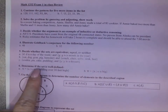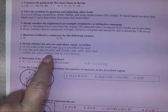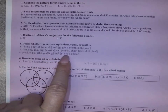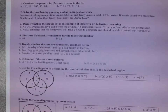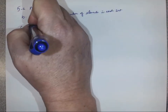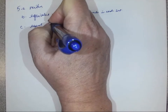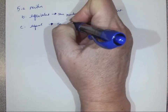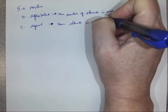For Part C, we have cookie, pie, cake, and pudding — and the other set is defined as 'y is a dessert.' All of those items are desserts, so they are equal sets. They have the same elements, making them equal.